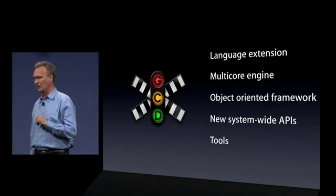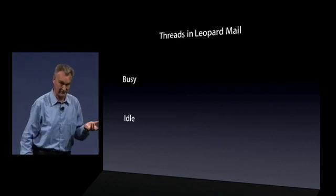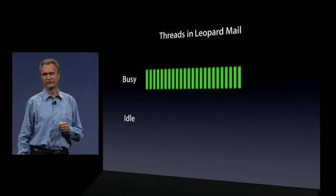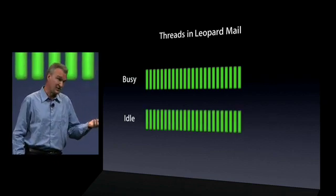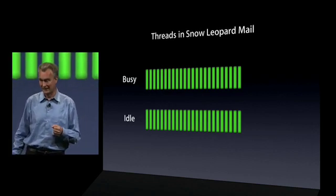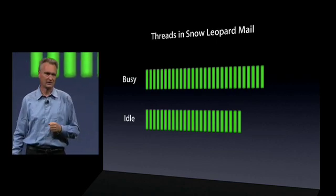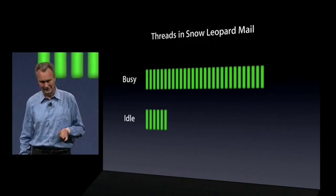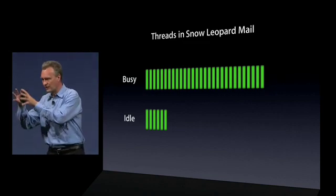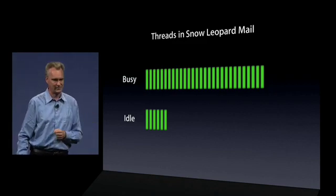To give you a taste of what it feels like to use GCD, let's look at threads in Leopard for the mail application. When mail is busy, it has a certain number of threads, and when it's idle, it keeps pretty much all those threads. In Snow Leopard, when mail is busy, it uses more threads to take advantage of the multicores. But when mail is idle, all those threads go away, giving back resources to the system. When you apply that pattern for every major application, you get a big win in performance and responsiveness.